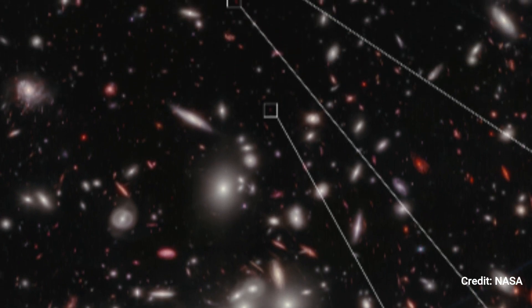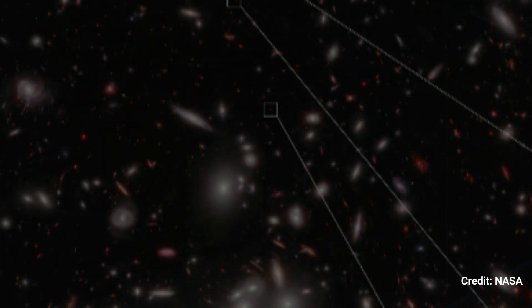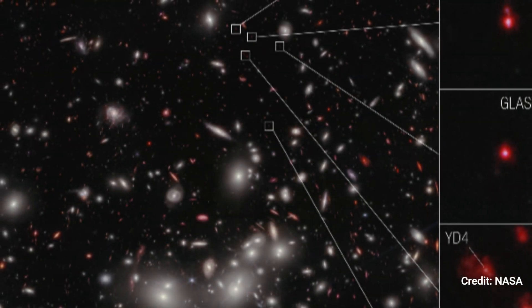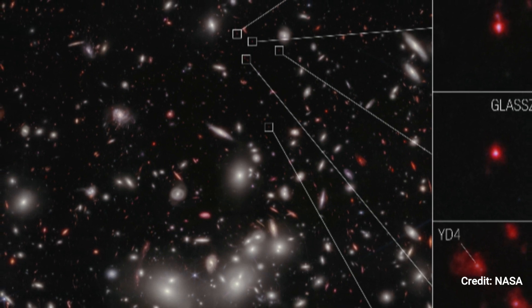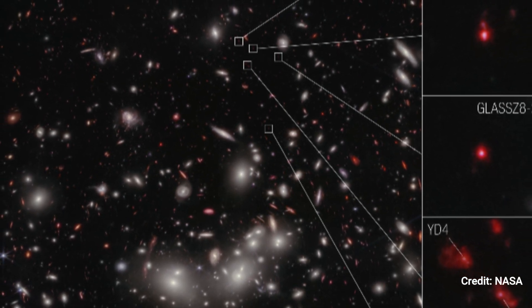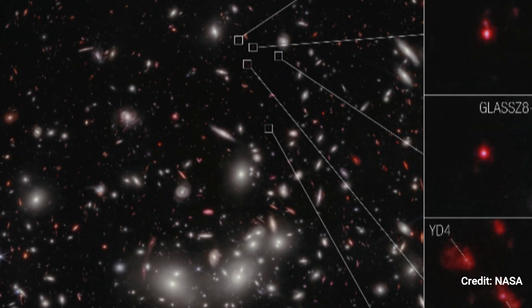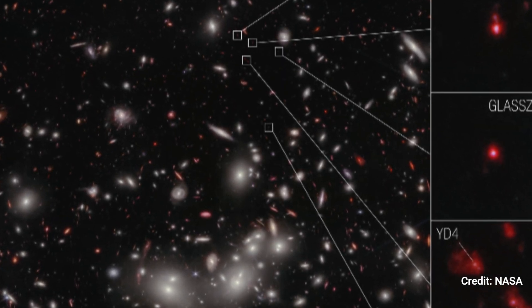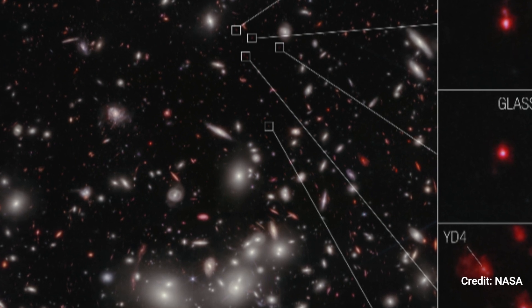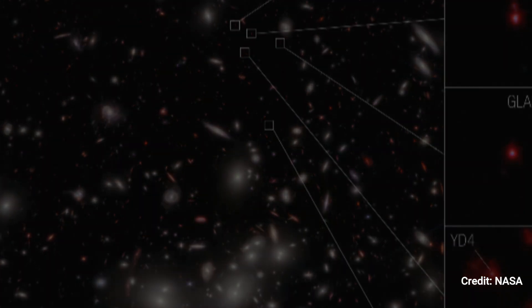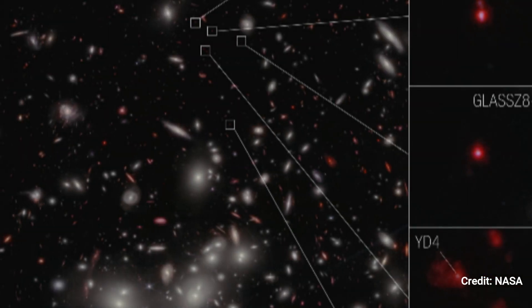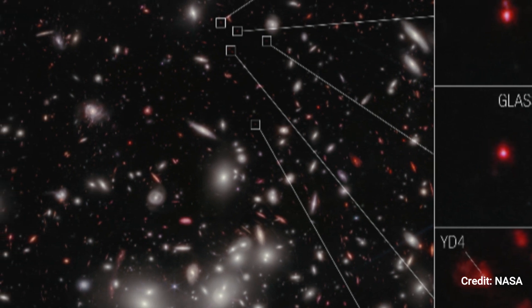Galaxy YD4, which had previously been thought to be farther away based only on imaging data, was more precisely put at the same redshift as the other galaxies. At extreme distances, astronomers use the term redshift to account for the fact that, as the cosmos expands, light wavelengths are stretched and shifted to redder, longer wavelengths.